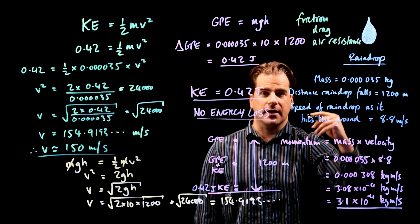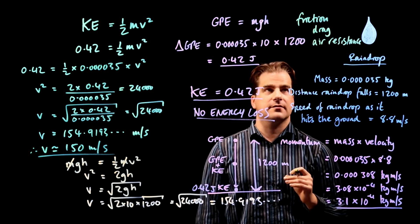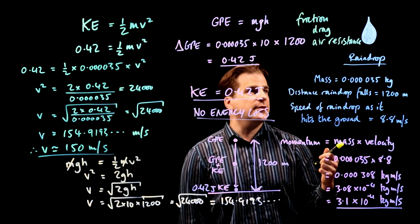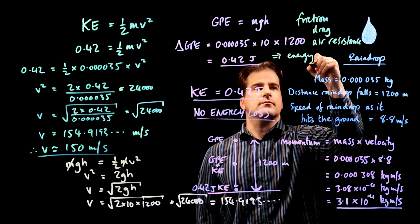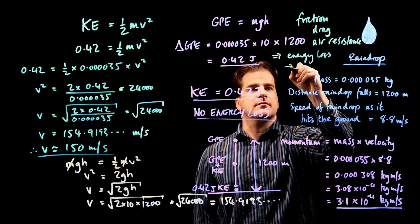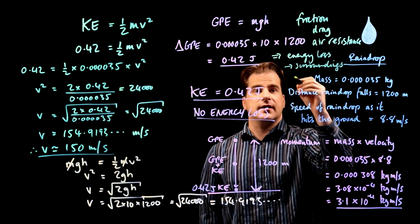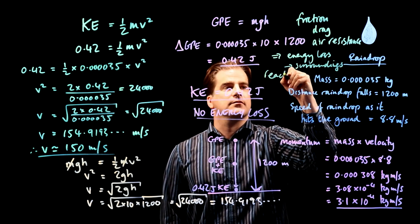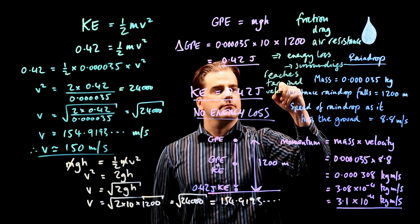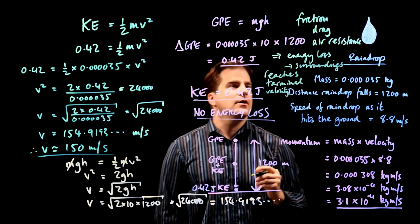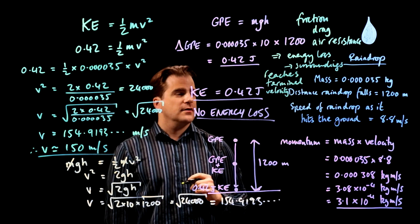between the raindrop and the air, okay. You could say, you could describe it as drag or air resistance. Okay. I would recommend getting all three of them down on the paper. Like I say, give the examiner as many reasons as possible to give you full marks. Okay. So because there's friction between the raindrop and the air, there is therefore energy loss to the surroundings. Okay. And you can also say it reaches terminal velocity. Okay. All of that will get you your two marks, definitely.